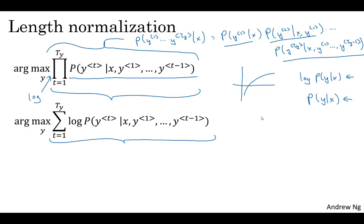So if you multiply a lot of numbers less than one together, you just tend to end up with a smaller probability. This objective function has an undesirable effect that it maybe unnaturally tends to prefer very short translations, tends to prefer very short outputs, because the probability of a short sentence is determined just by multiplying fewer of these numbers less than one. And by the way, the same thing is true for this—the log of a probability is always less than or equal to one. So the more terms you add together, the more negative this thing becomes.